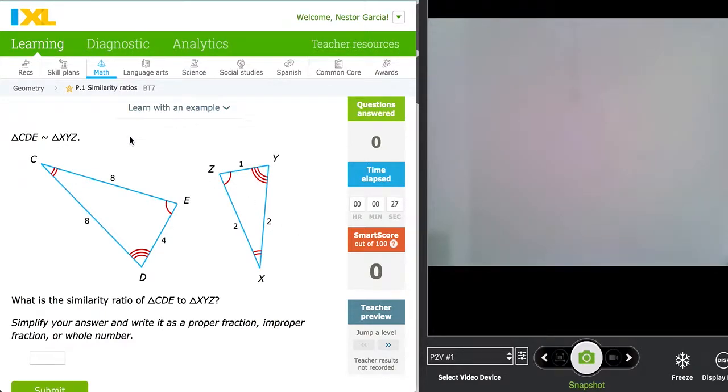Similarity ratios. Through this lesson you will learn how to create a ratio of two similar figures. Let's start with these two triangles. We have triangle CDE similar to triangle XYZ.